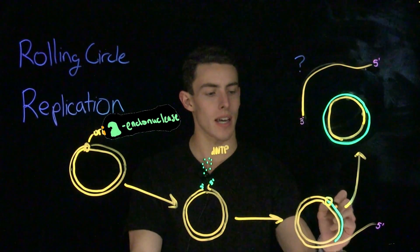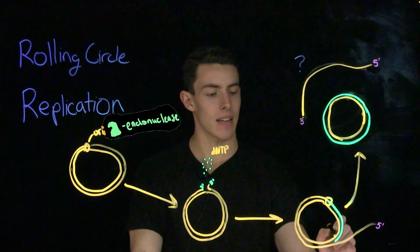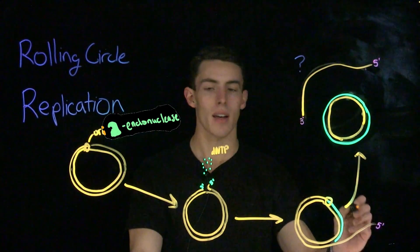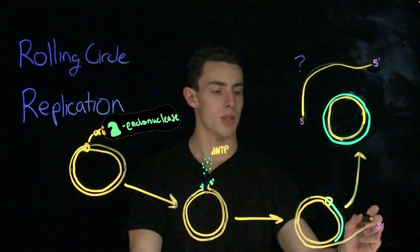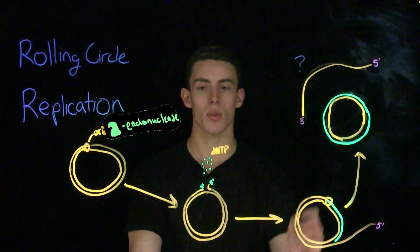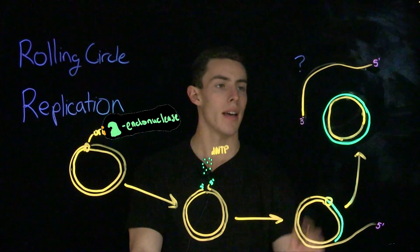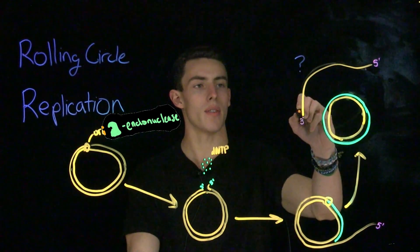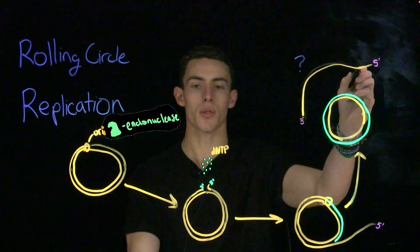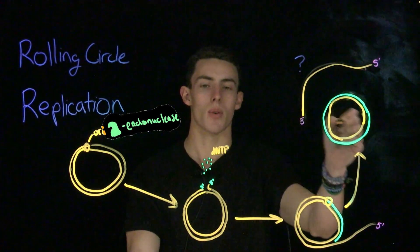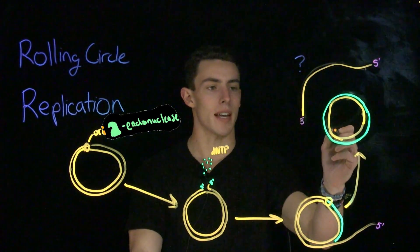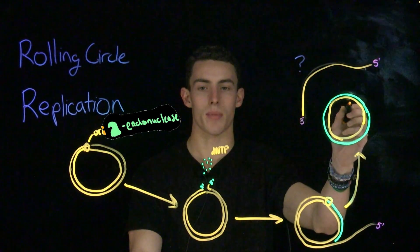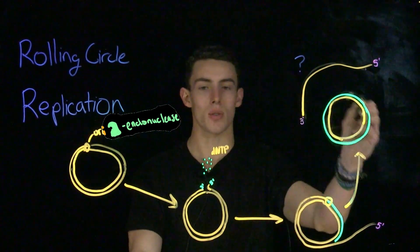As replication continues with this new strand leading into the replication fork created by the five prime strand, this five prime strand is going to unroll like string coming off of a spool of yarn. Eventually, when the molecule is complete, we're going to have a free single-stranded linear piece of DNA and a new circular piece of DNA where we have one template strand from the parent and one new strand.